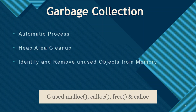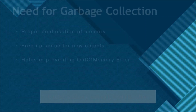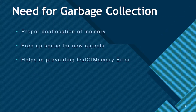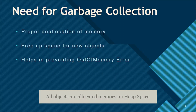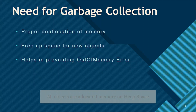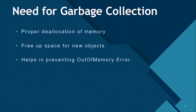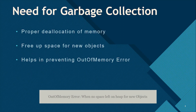In programming languages like C, allocating and deallocating memory is a manual process. In Java, the process of deallocating memory is handled automatically by the garbage collector. Why do we need garbage collection at all? In running applications, objects will be created and will need space on the heap. If proper deallocation of unused objects is not done, it will keep filling the heap space, which will eventually result in an out-of-memory error and stop the application.